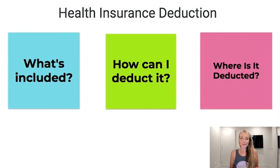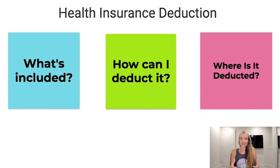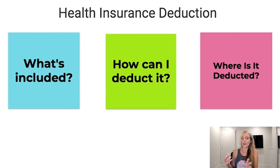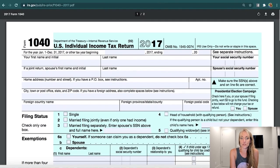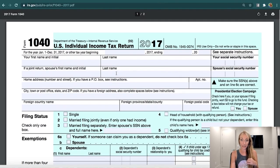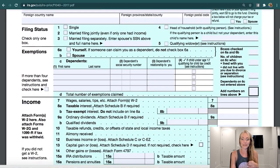How do you deduct health insurance premiums and long-term care premiums? Generally, you're going to be paid through your business — it will depend on your type of business. Generally, you're paid money from your business and then you buy your personal health insurance. In that situation, you actually take the deduction on the personal Form 1040.